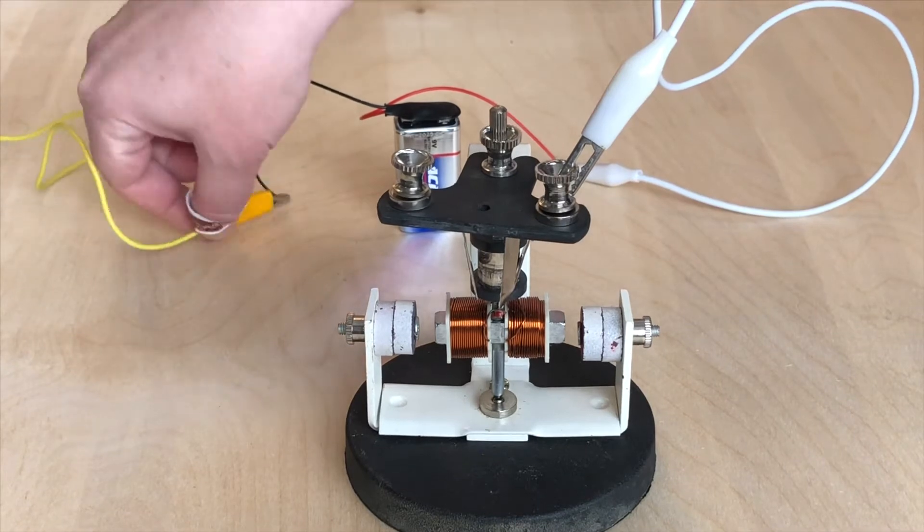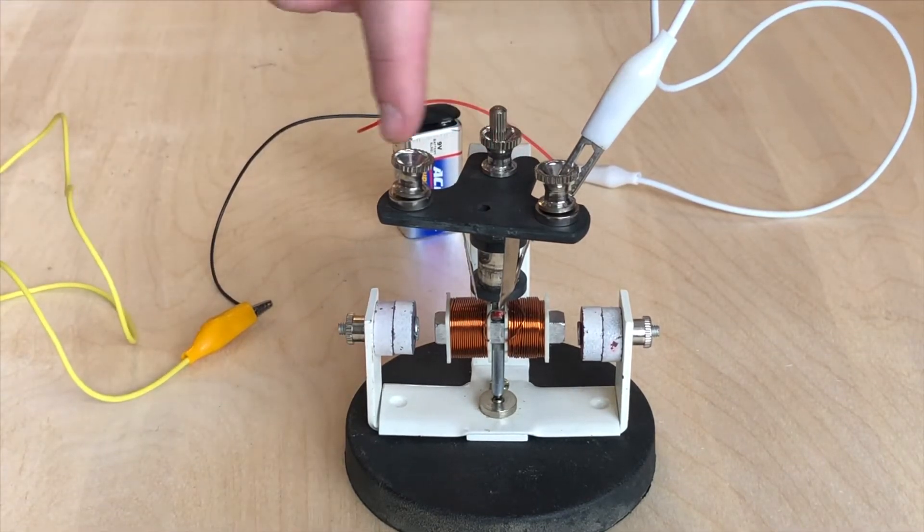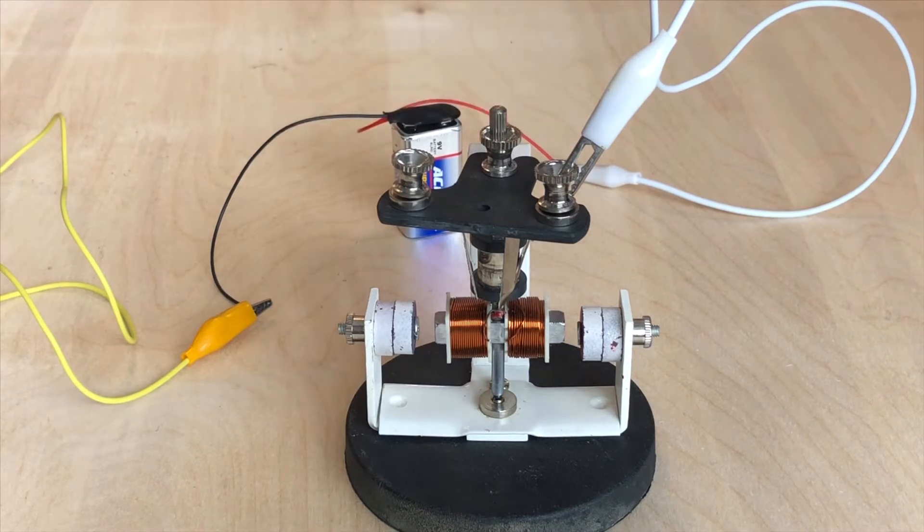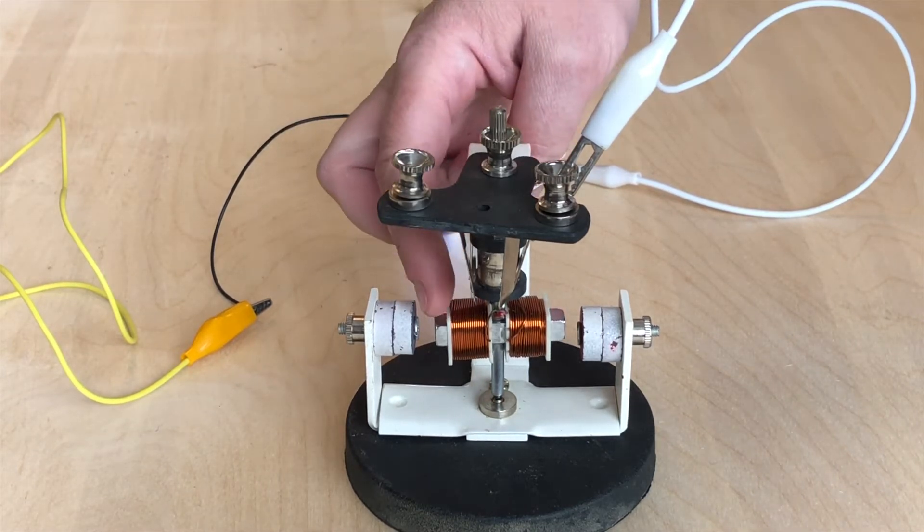So how this works is when we connect our 9 volt battery to the two leads, we will have current flowing through our system. We will induce polarity in our armature.